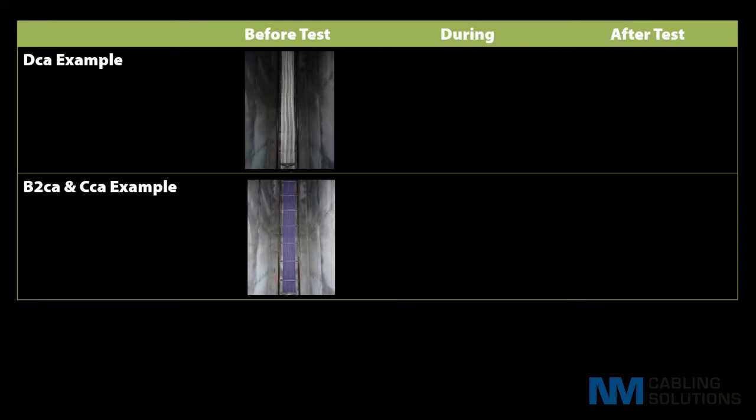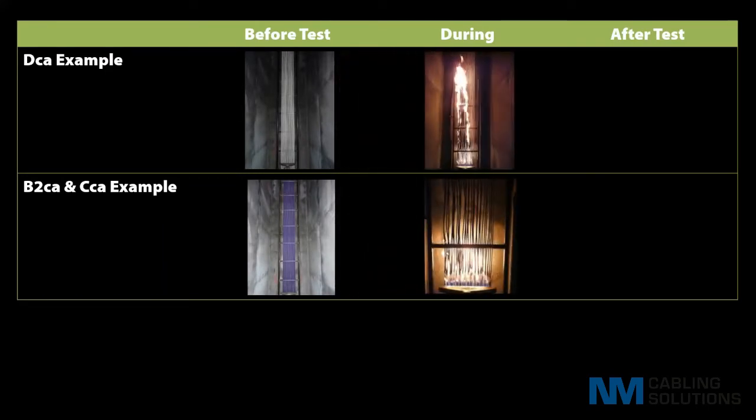The duration of the EN 5399 test used to classify smoke production is 20 minutes, during which time a 20.5 kilowatt flame is applied to the test sample. Typically this involves 24 individual cables that are attached to a ladder in a vertical test chamber.